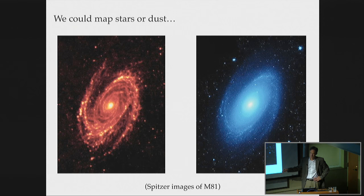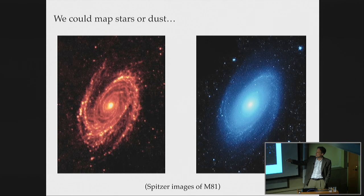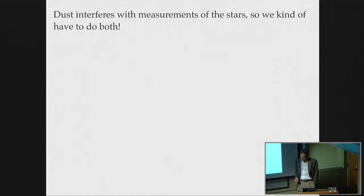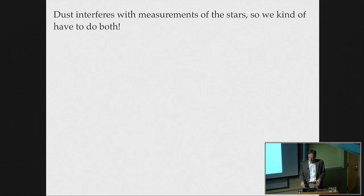Here are some images from the Spitzer Space Telescope. This is M81 — this is how we usually see it in stars, but this image actually shows the dust in the galaxy. The dust is clumpier, tending to come in clumpy clouds, while the stellar distribution is a little smoother. This is near-infrared, so the starlight isn't very affected by dust. If we looked at optical or UV bands, you'd see darkness where the dust is. Dust interferes with measurements of stars, and stars help with measurements of dust — they're two sides of the same coin.